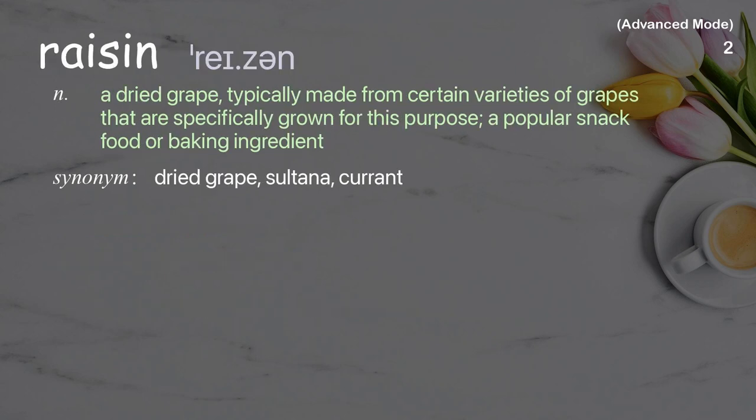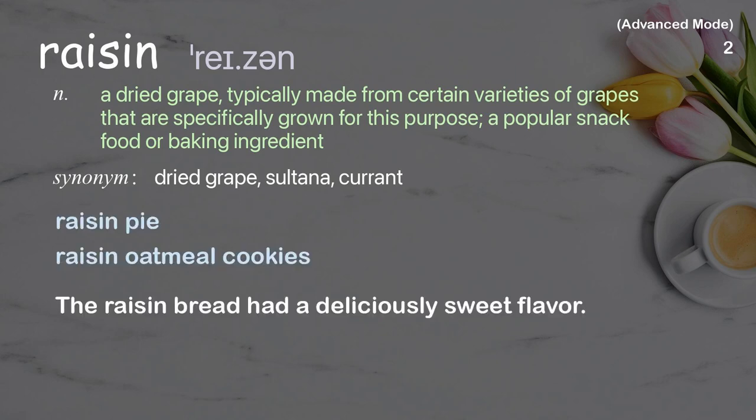Raisin. A dried grape, typically made from certain varieties of grapes that are specifically grown for this purpose, a popular snack food or baking ingredient. Examples: raisin pie, raisin oatmeal cookies. The raisin bread had a deliciously sweet flavor.